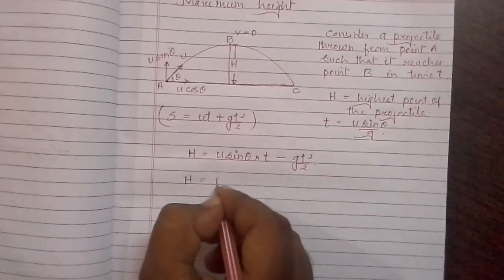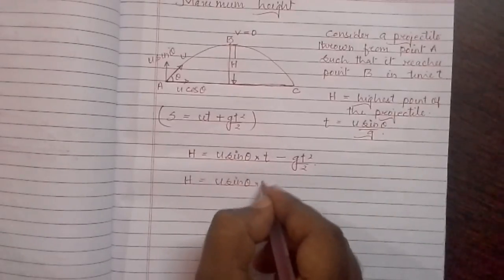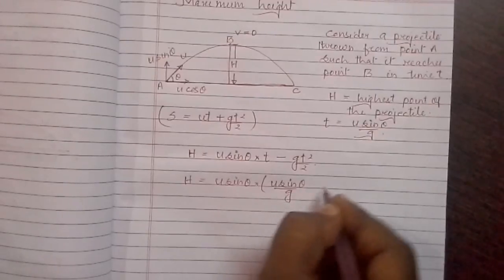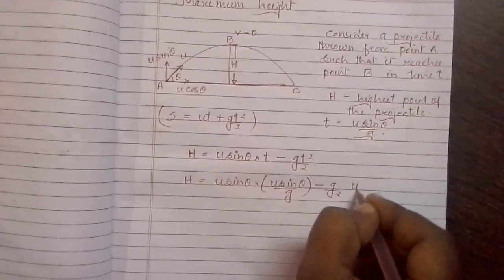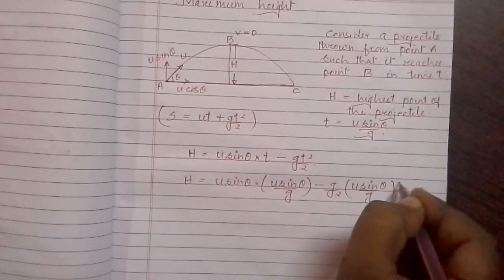In place of t we can write u sin theta by g, minus g by 2 into u sin theta by g whole square.